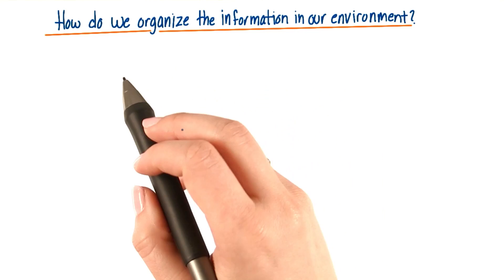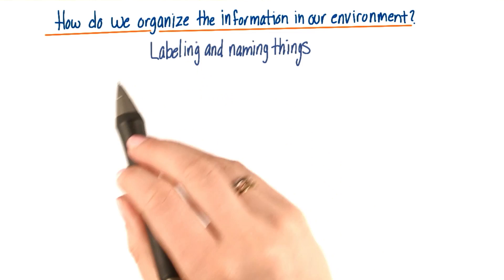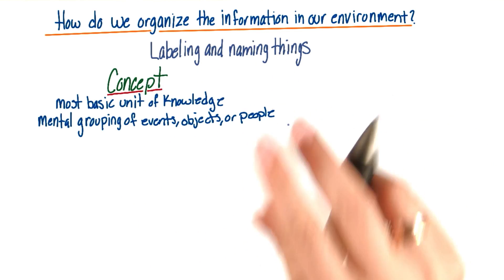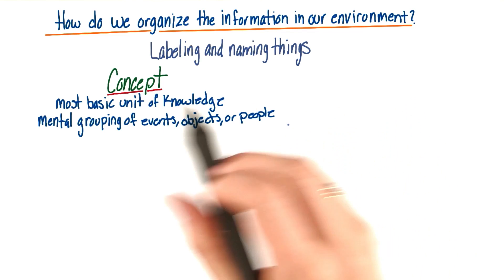So how do we organize information in our environment? Well, we do so by labeling and naming things. We first do this in the most basic unit of knowledge, which is called a concept.